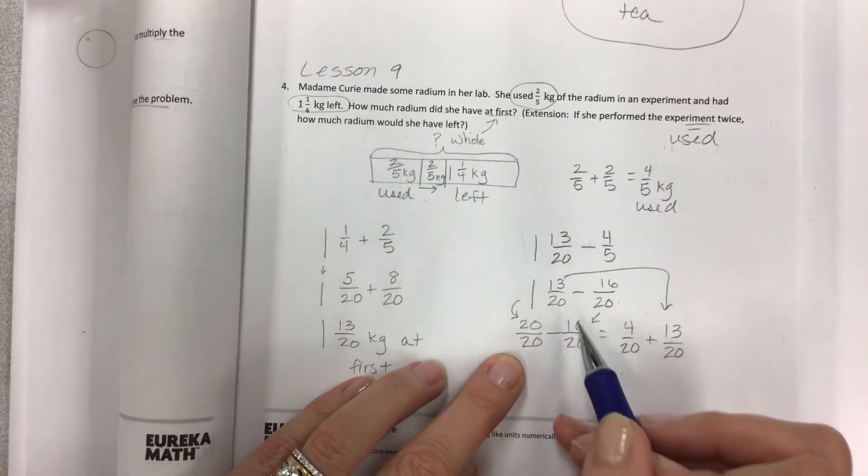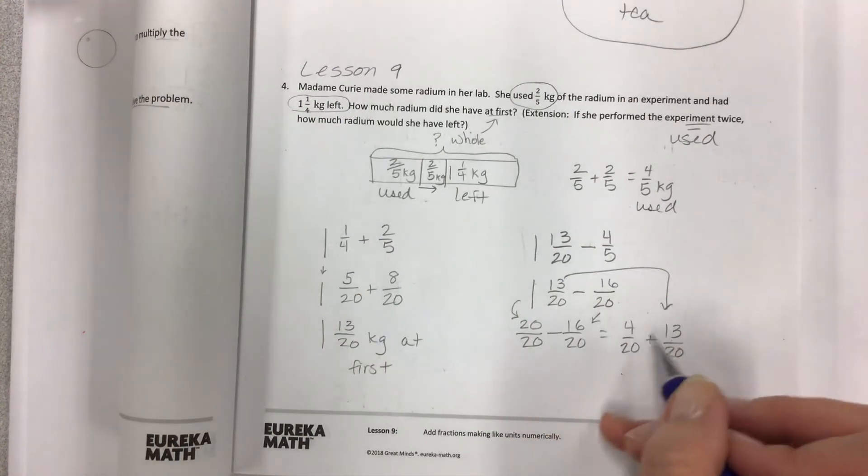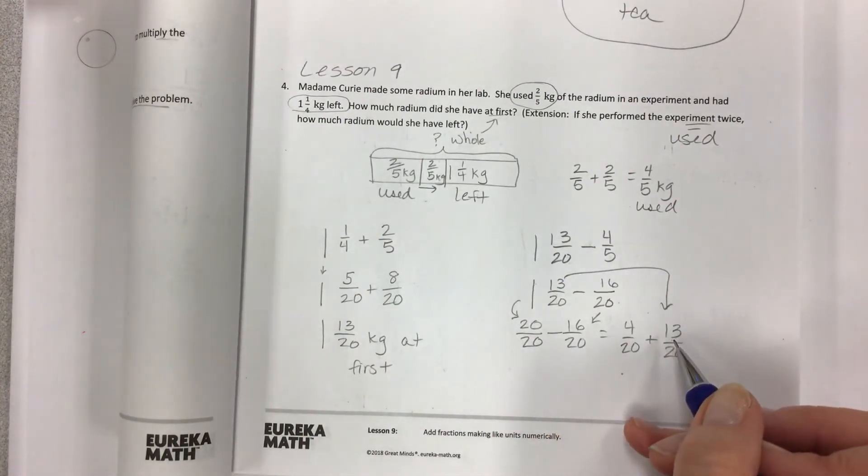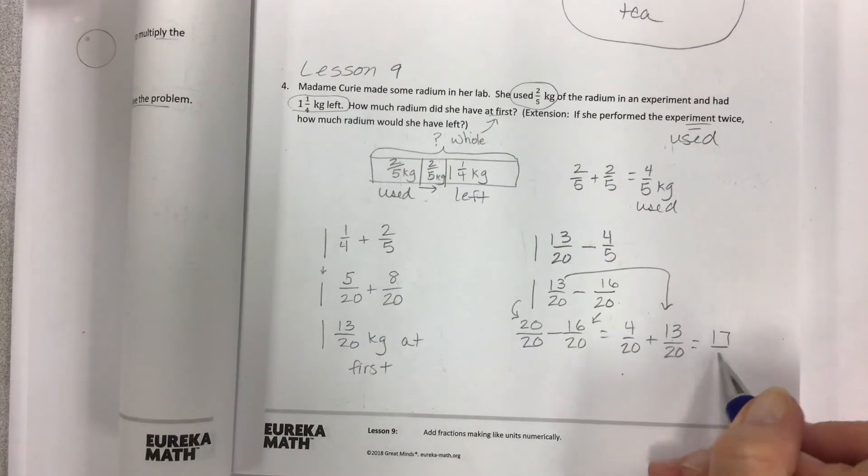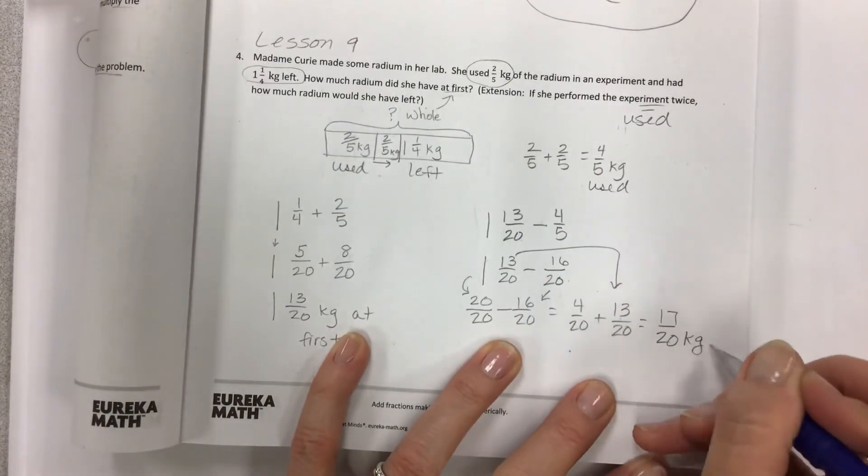Get four twentieths, and then reattach the thirteen twentieths that I still did not use from this one. So then it becomes this little tiny addition problem, and I end up with seventeen twentieths kilograms.